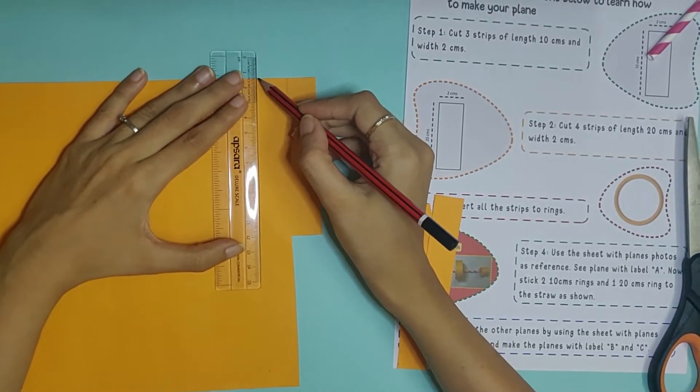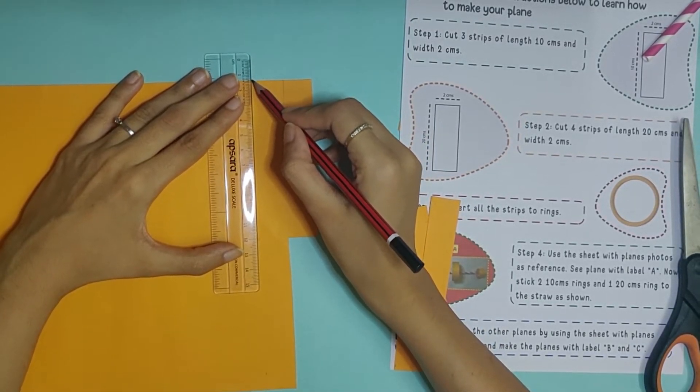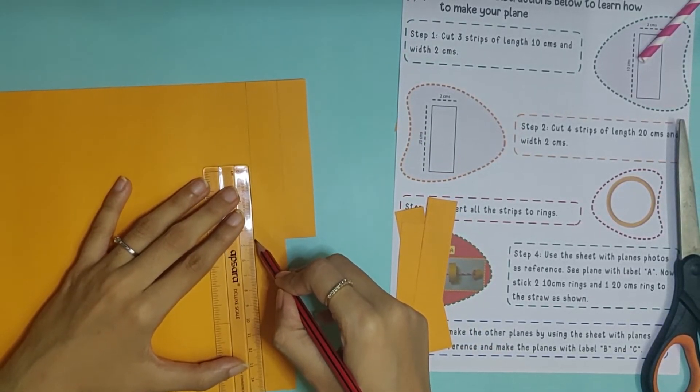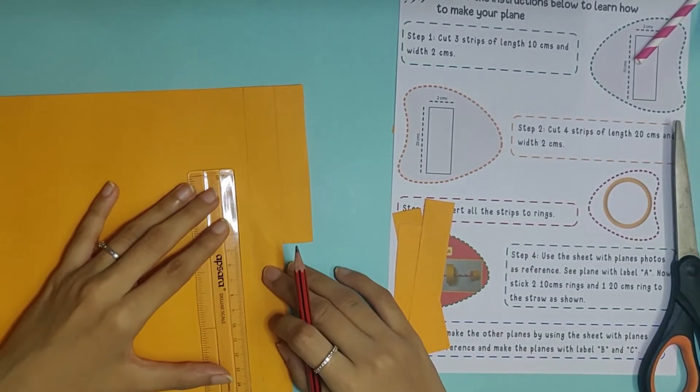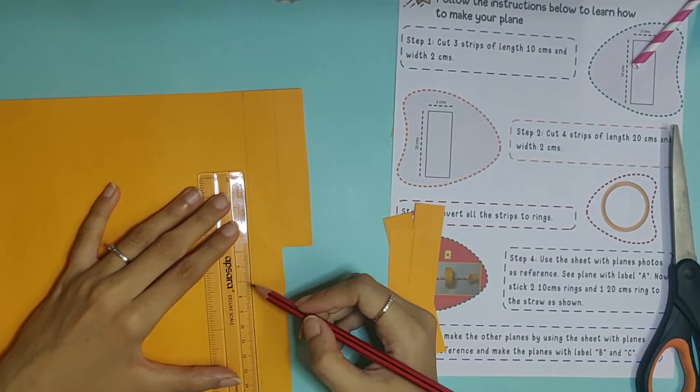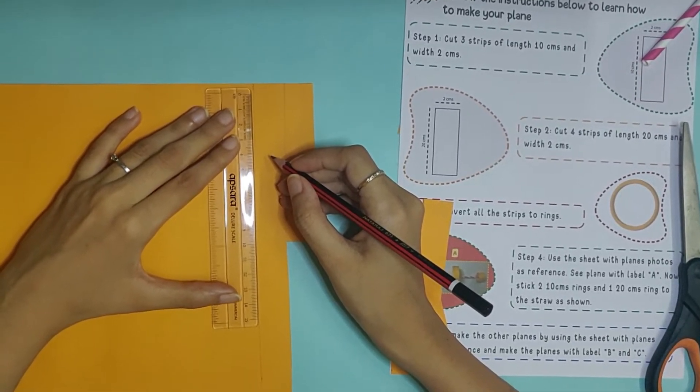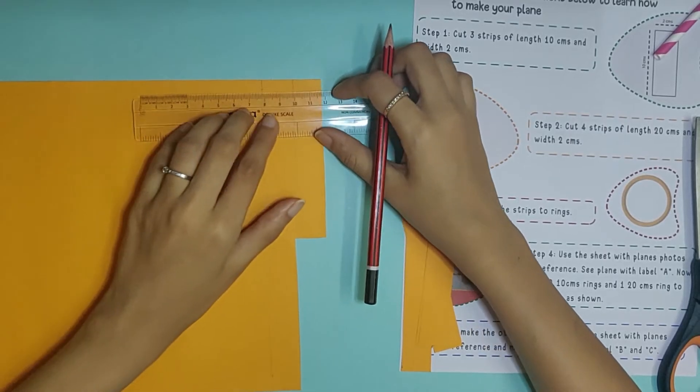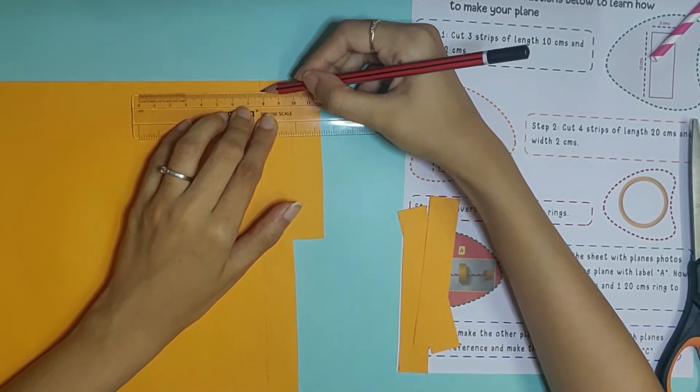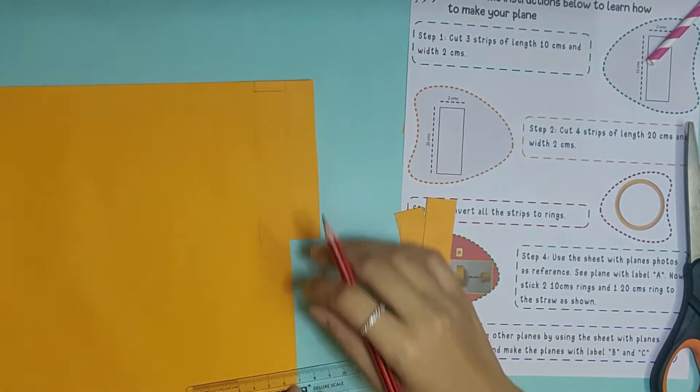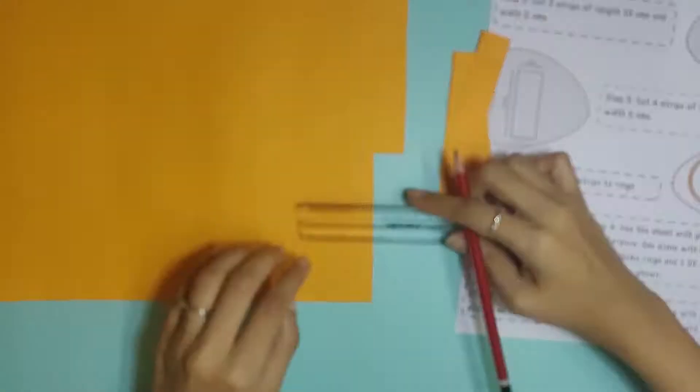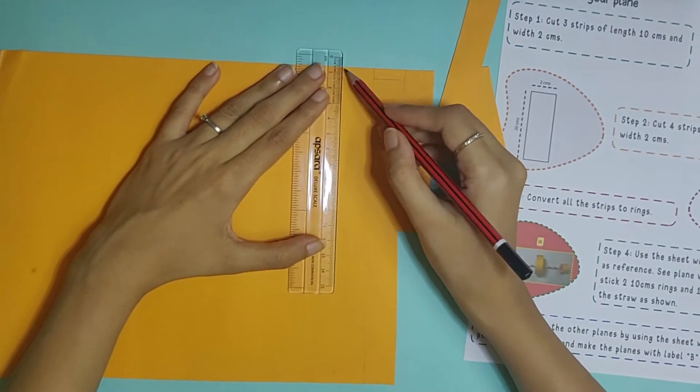Now step 2: cut 4 strips of length 20cm and width 2cm. Let's finish up this line as our border so we can easily make our 20cm length. Again, width 2. As we know this is already 10, so we're going to go 10 more up.